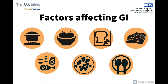Fat lowers the GI of a food — for example, chocolate has a low GI because of its fat content. Protein also lowers the GI of a food. The combination of foods with different GI values means that adding one low GI food will lower the GI of the whole meal.